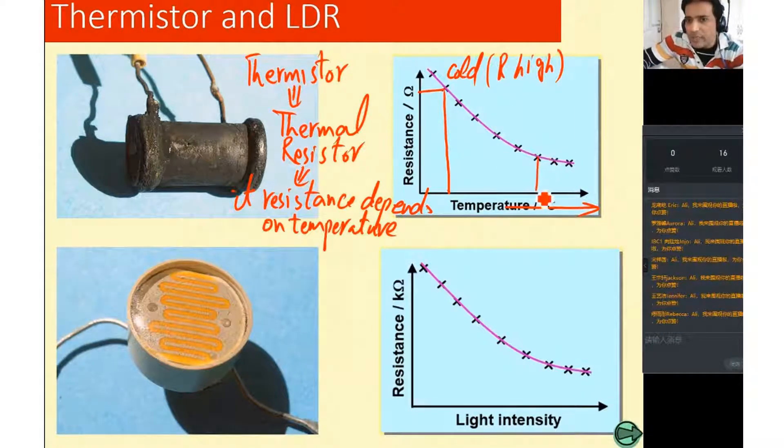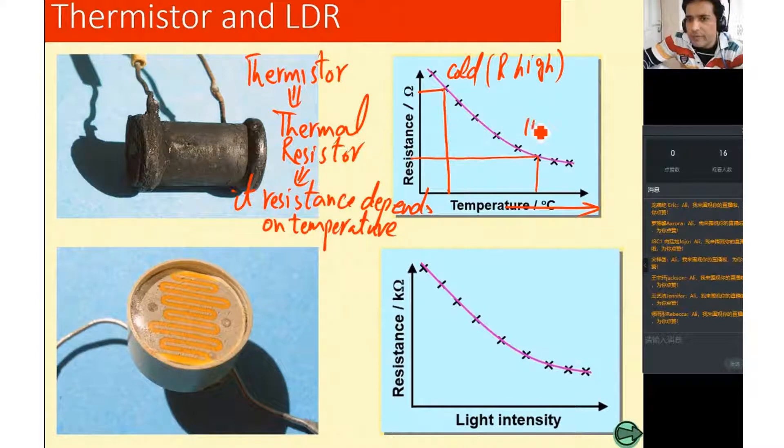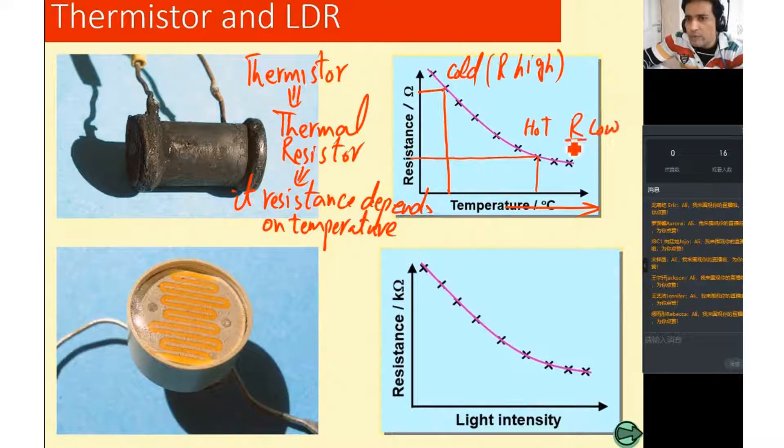But at this point, if you look here, it is hot now and the resistance here is low. So you will say when it is hot, its resistance is low. R is low, R for resistance.